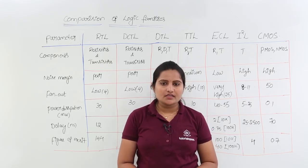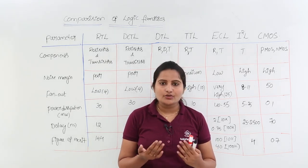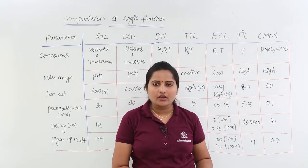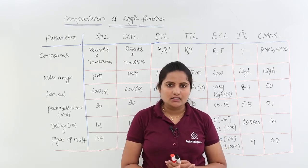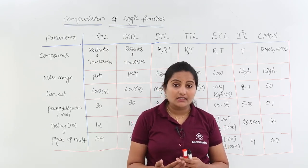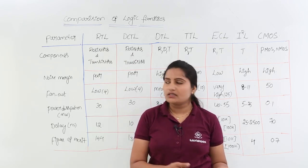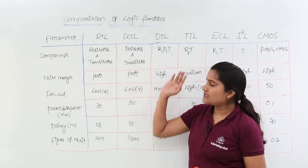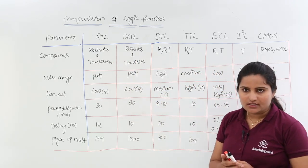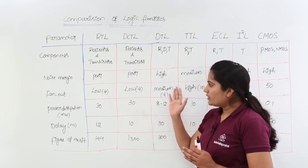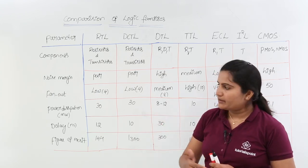In this class we are going to discuss the comparison of logic families. Up to now we discussed many logic families like bipolar logic families and unipolar logic families — MOS transistors like PMOS, NMOS, CMOS — and coming to bipolar we discussed RTL, DCTL, DTL, TTL, and ECL. Now we are going to compare all bipolar and unipolar families across different factors.